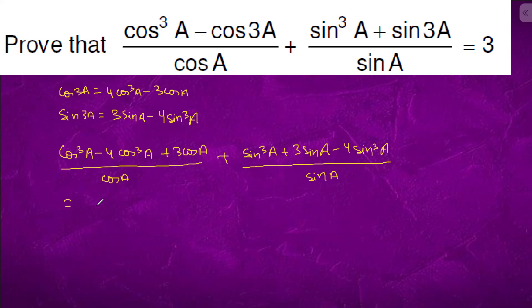This is 4sin³A minus sin³A, which equals 3sin³A divided by sinA, which is 3sin²A.